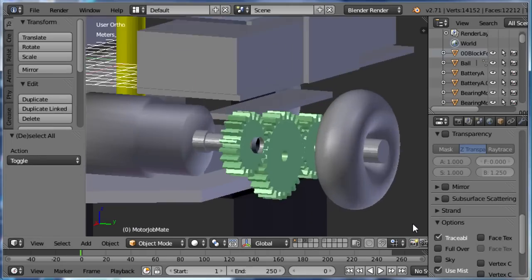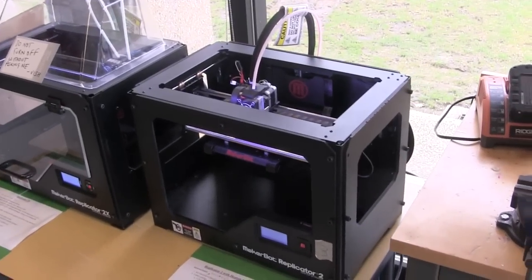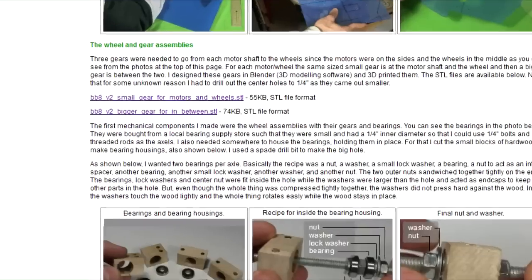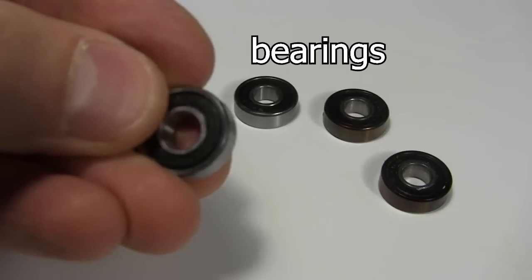I designed the gears in Blender and 3D printed them out of PLA at our local University of Ottawa makerspace. The STL files for the gears are available on my website. The gears and wheel are mounted on bearings housed in these blocks of wood. These are the bearings.